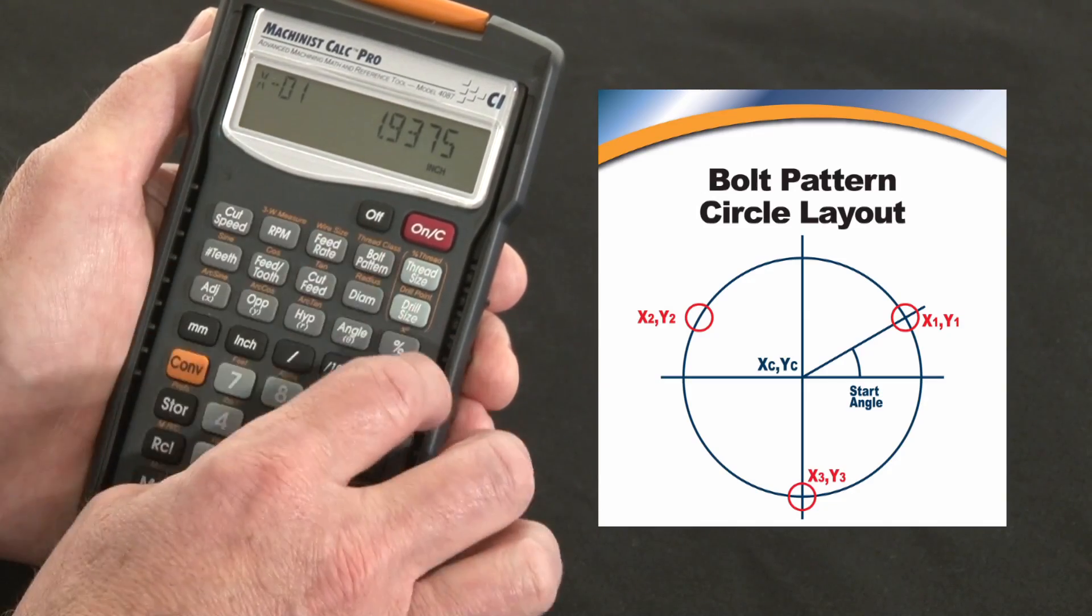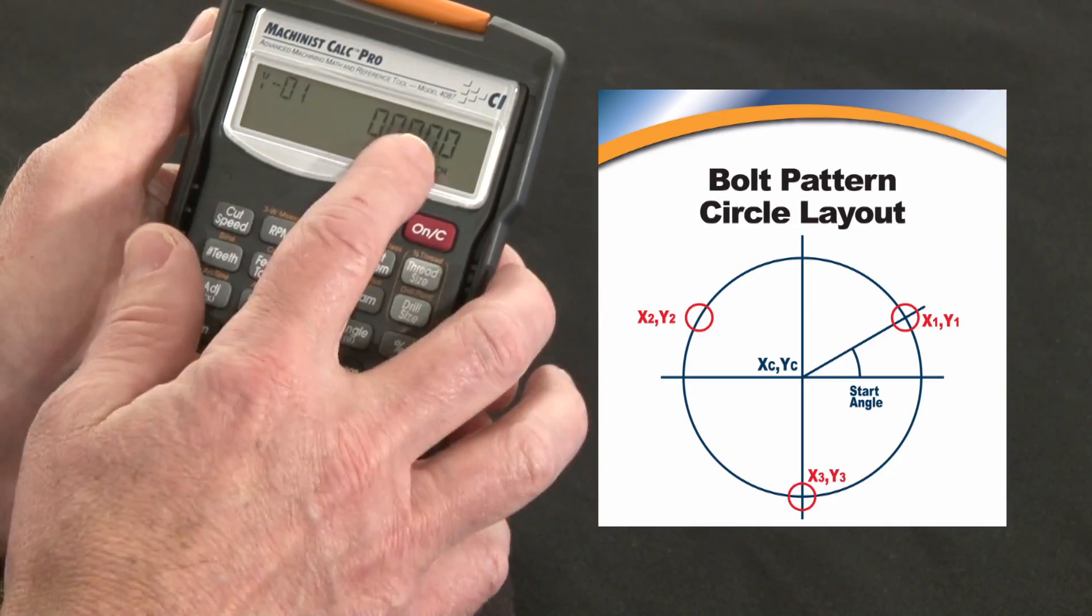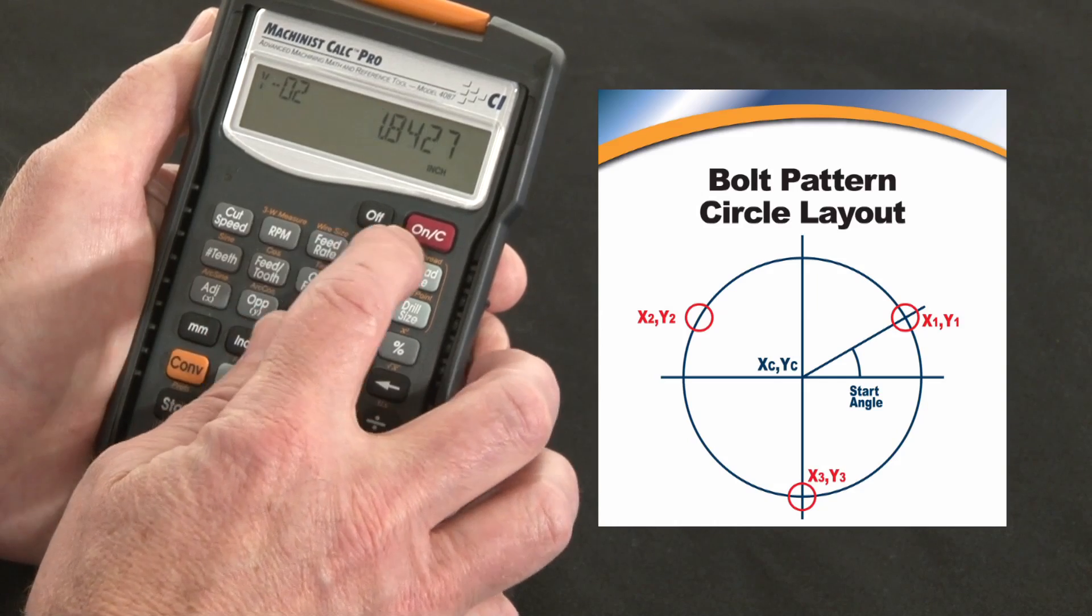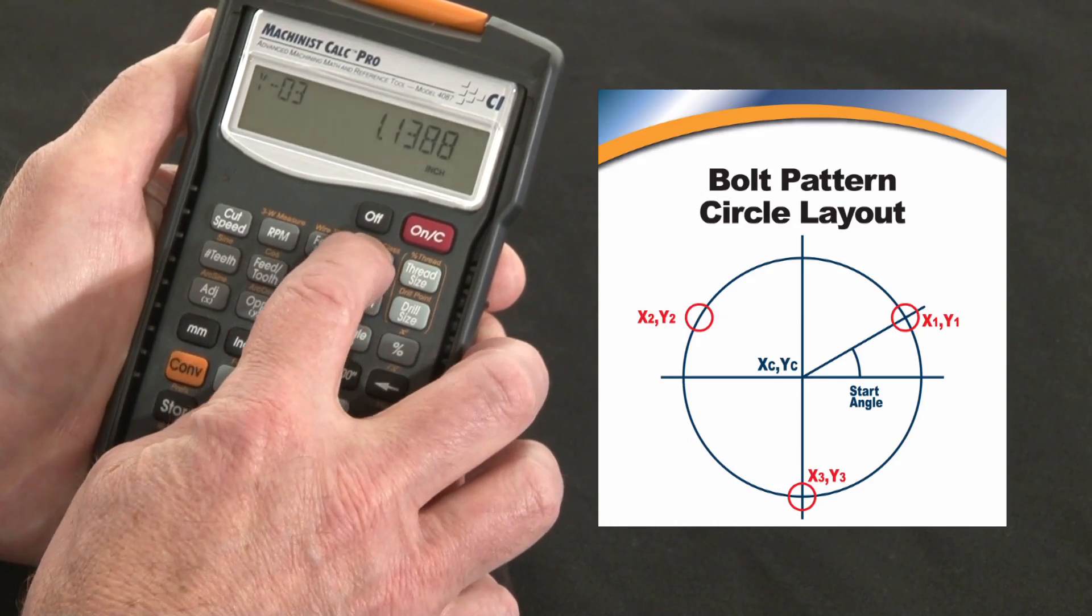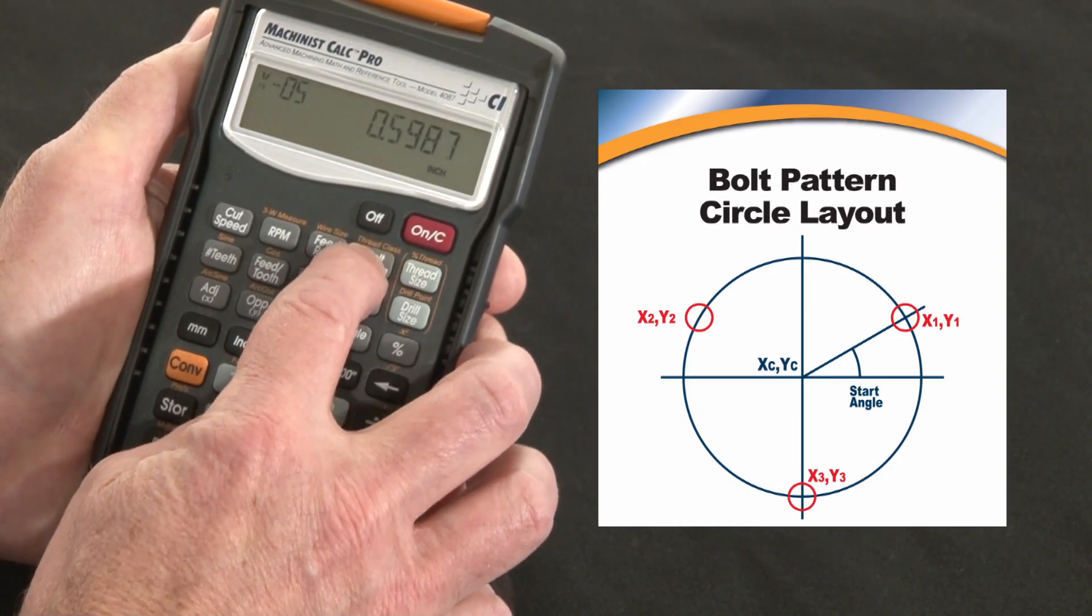Pressing it again gives me my X1 location, again will give me my Y1 location. I can go all the way through, pressing again and again and it gives me all my XY coordinates all the way through number 5.